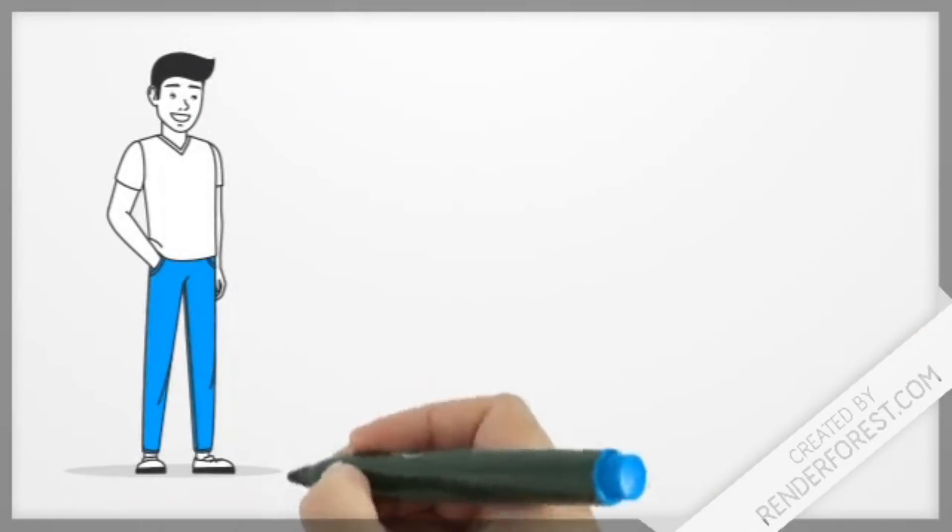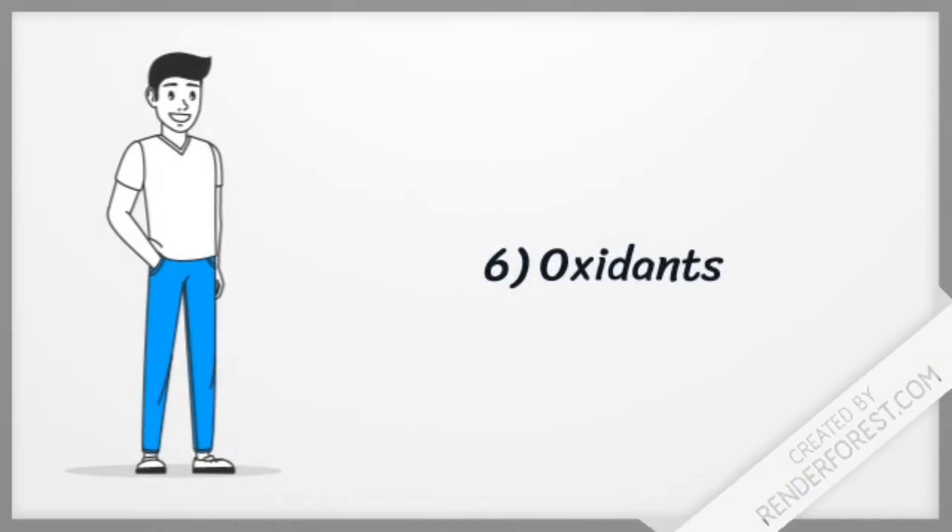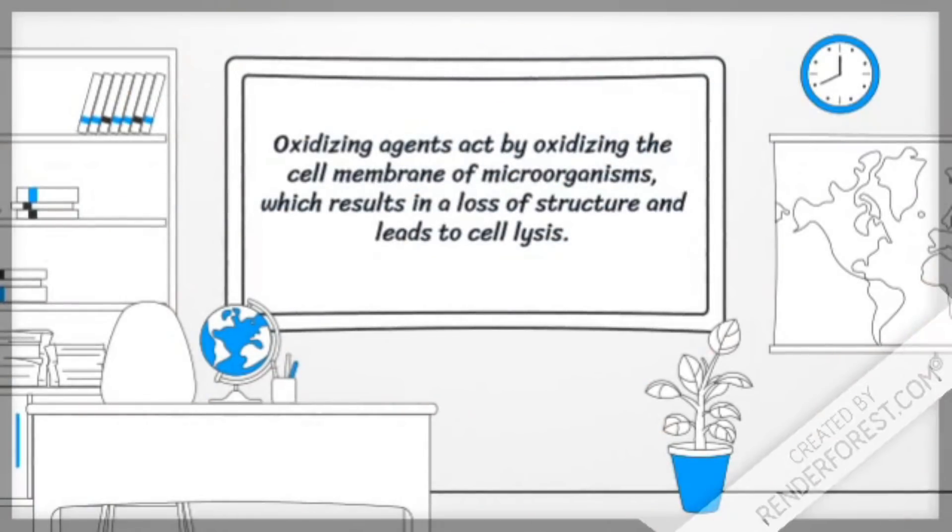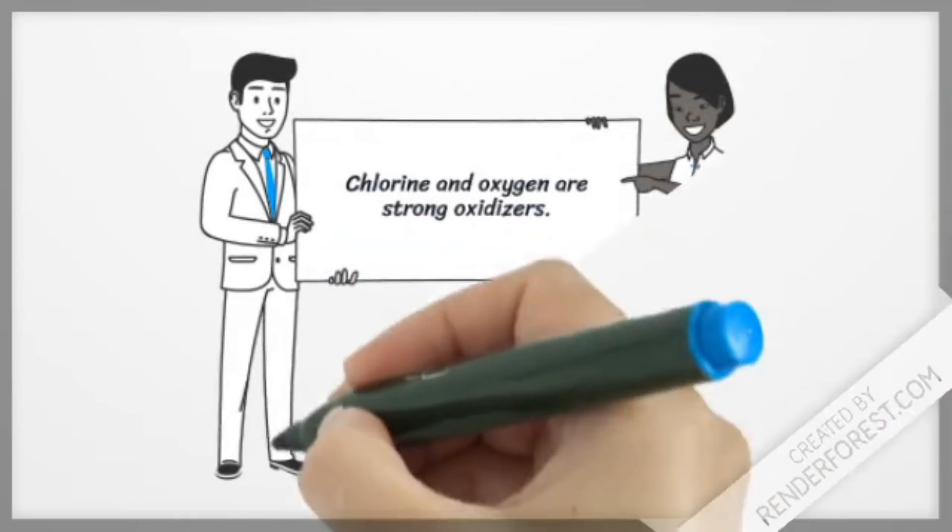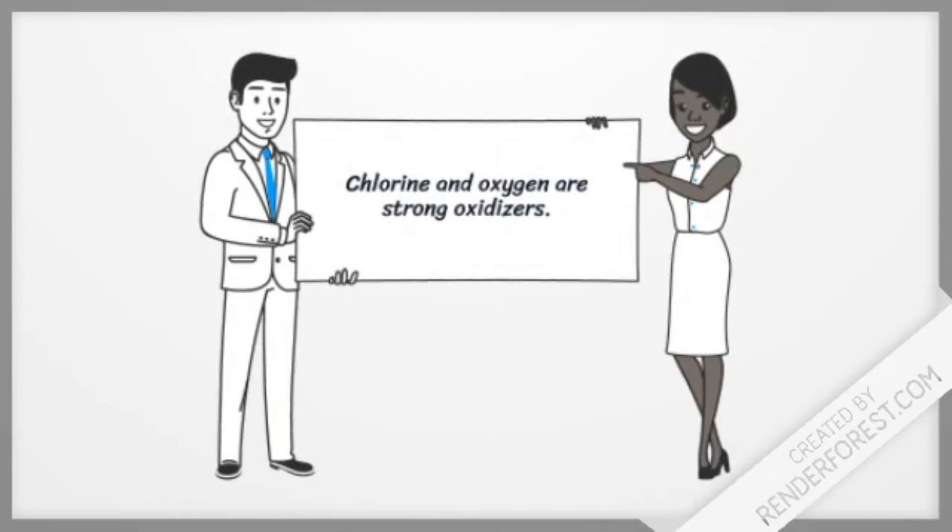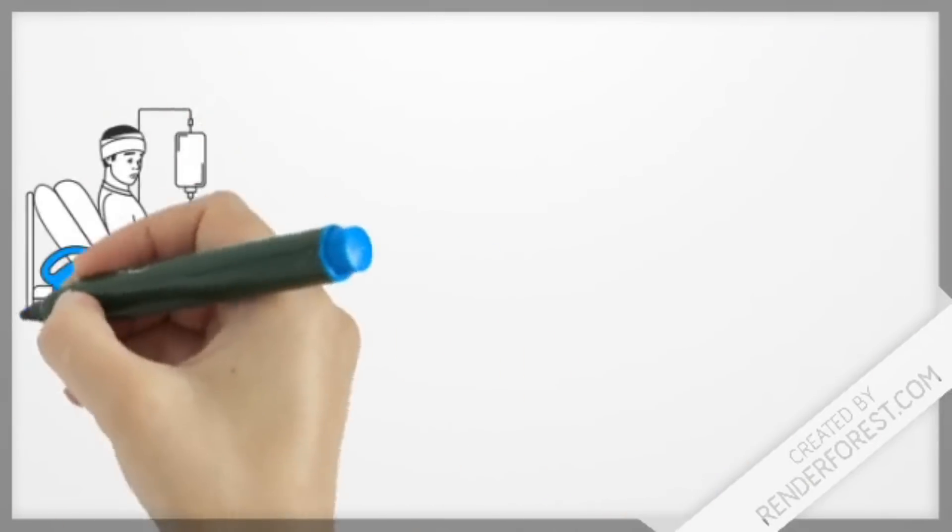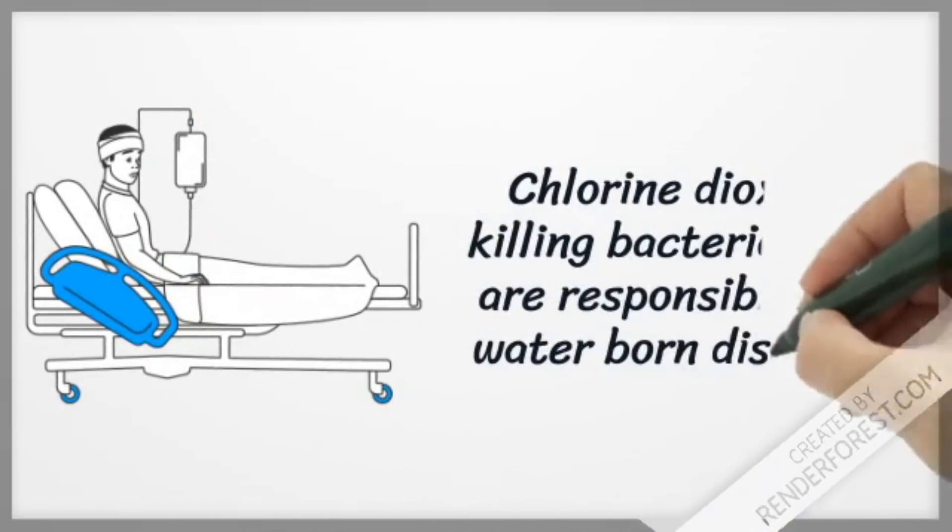Oxidants. Oxidants break down the cell membrane by oxidizing it. Examples of strong oxidants are chlorine and oxygen. It kills the bacteria that cause waterborne diseases such as cholera.